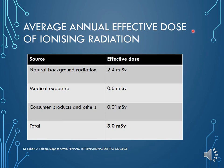The average annual effective dose of ionizing radiation a human being receives is: natural background radiation of 2.4 mSv, medical exposure of approximately 0.6 mSv, and consumer products and others at 0.01 mSv — summing to a total of approximately 3 mSv per year.